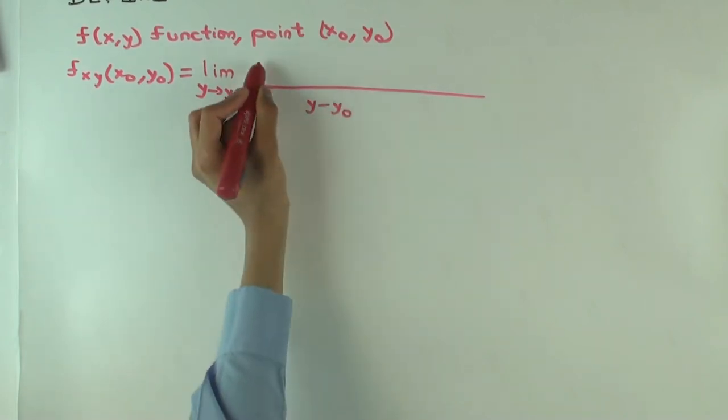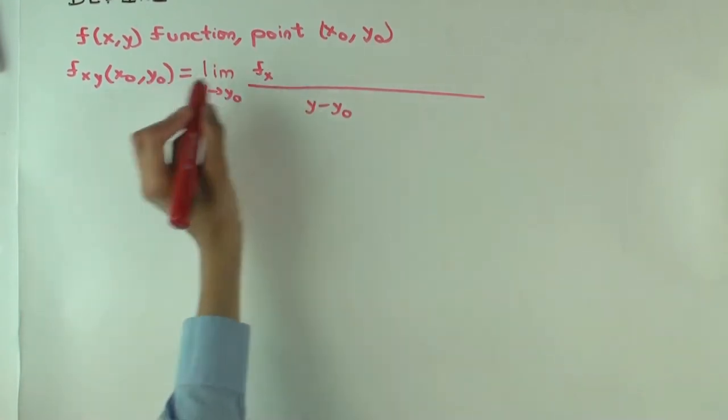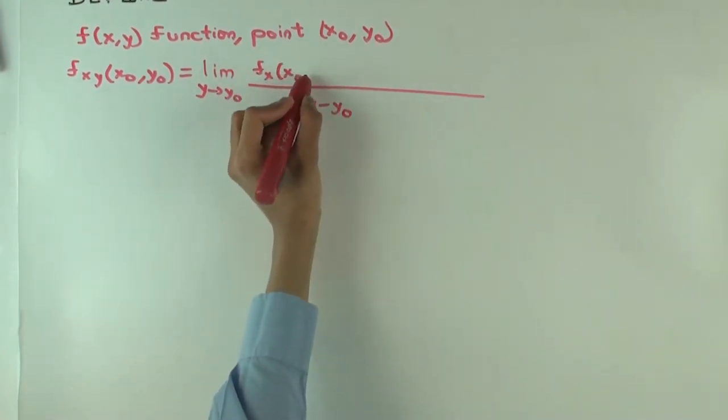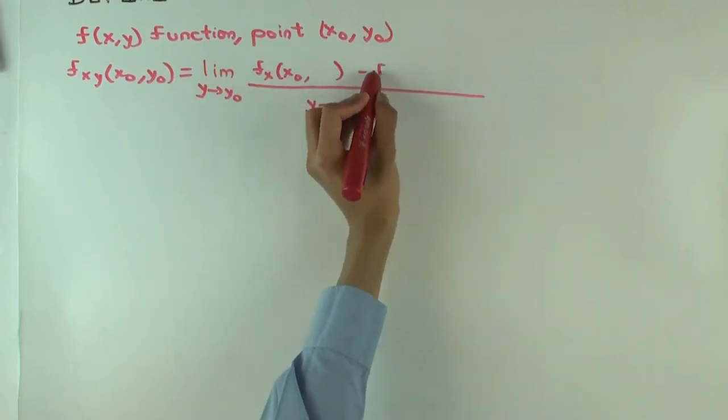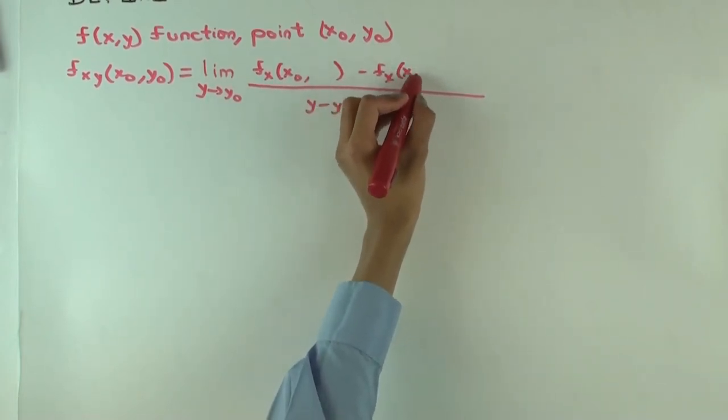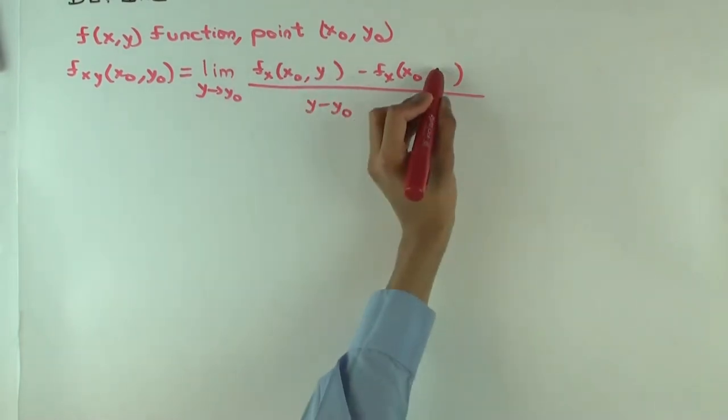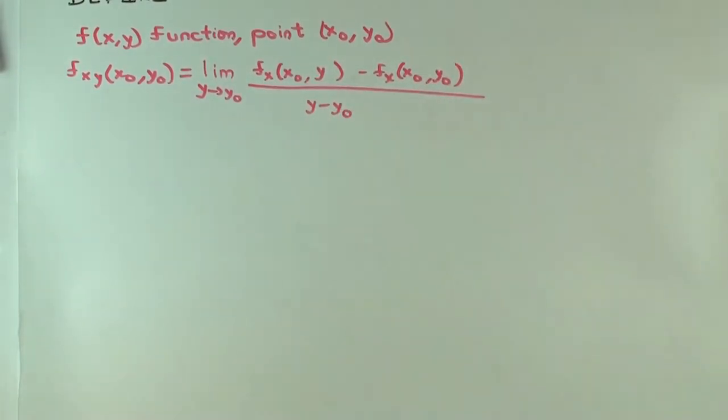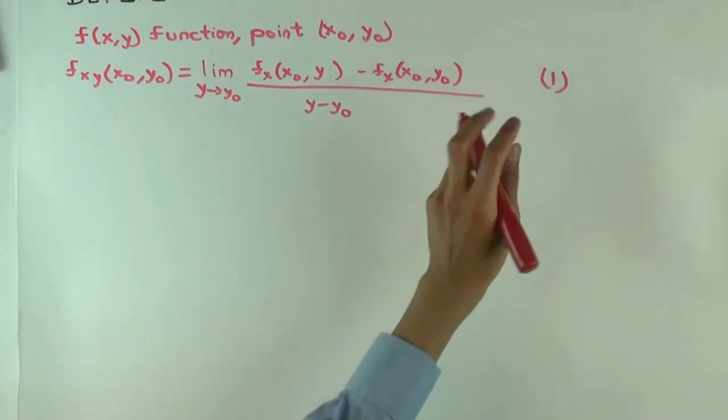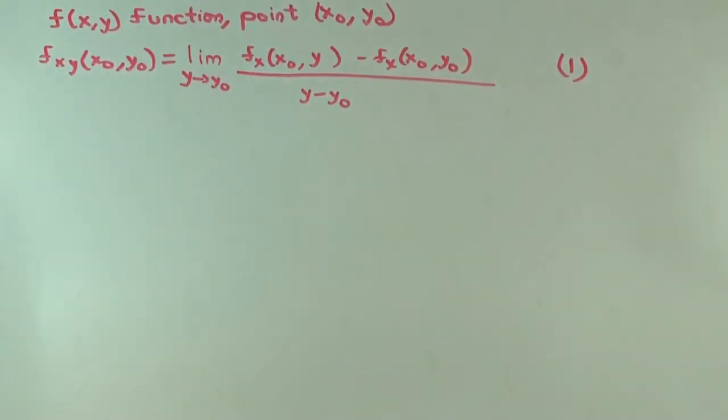F sub x. That's the function you're trying to differentiate. X coordinate remains x0. So y. And here you put the function at y minus the function at y0. Let's call this equation 1. Is this all captured?